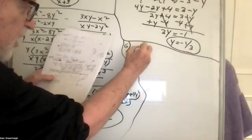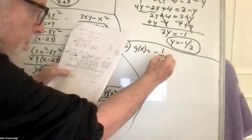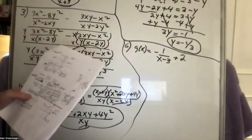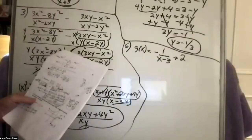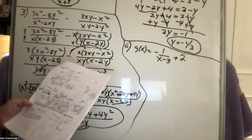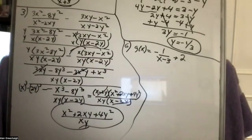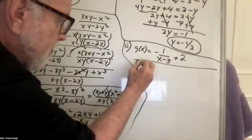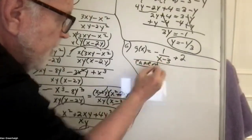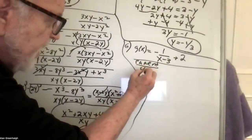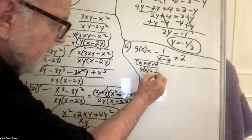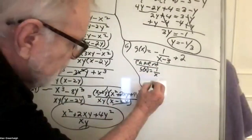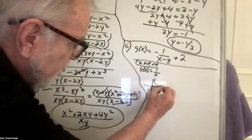You're given this function and told to state the parent function, the domain, the range, the vertical and horizontal asymptotes, and then sketch the graph. The parent function for this type of function would be f(x) equals 1 over x. Some people showed the parent function with the negative — the negative would cause the graphs to be in the second and fourth quadrants instead of the first and third.